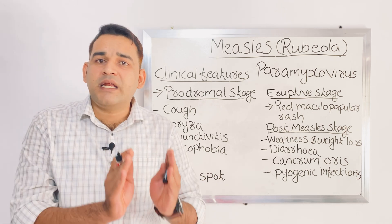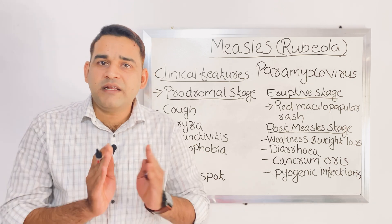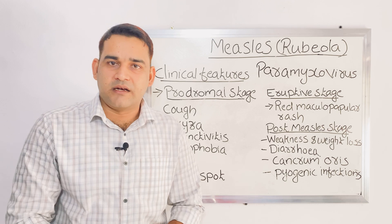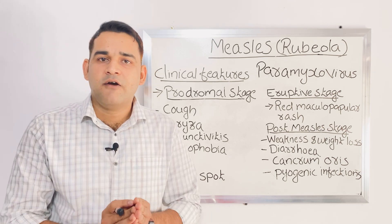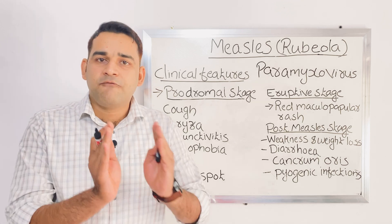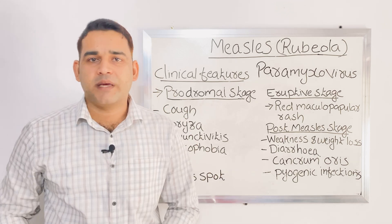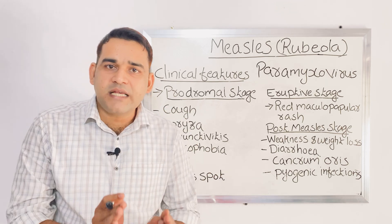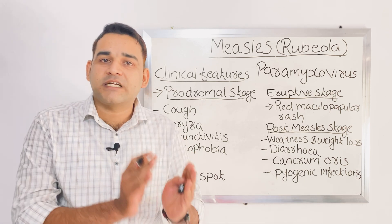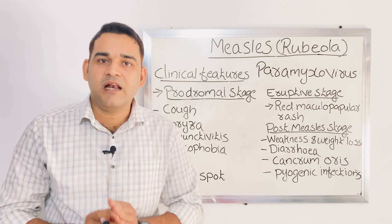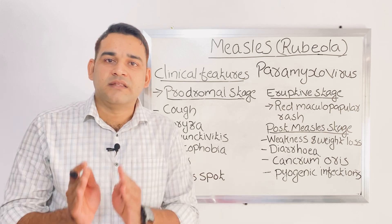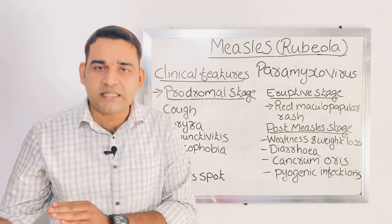Regarding the period of communicability — when this disease will spread from one child to another — it is mainly spreading four days before the appearance of the rashes, as well as four days after the appearance of the rashes.